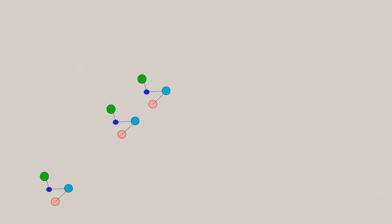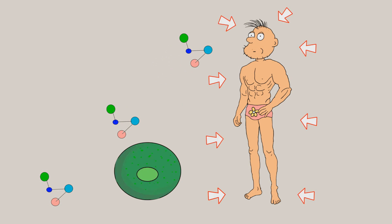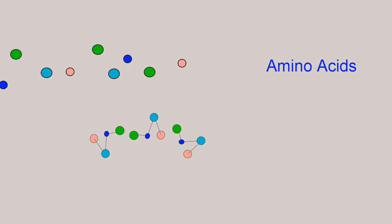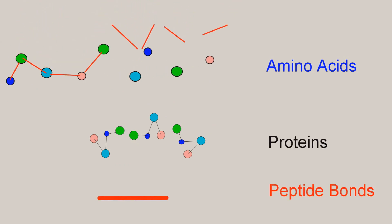Proteins are involved in just about any activity in the body, and at the cellular level, they pretty much run the cell. Proteins are made up of building blocks called amino acids. These amino acids are linked together through peptide bonds to form proteins anywhere from about 15 amino acids all the way up to almost 30,000.